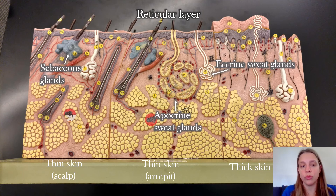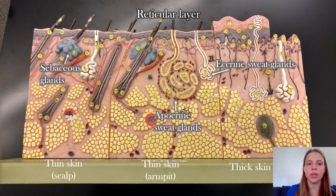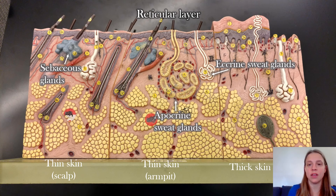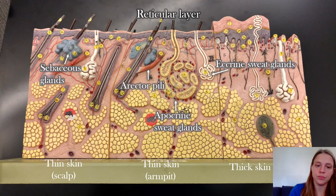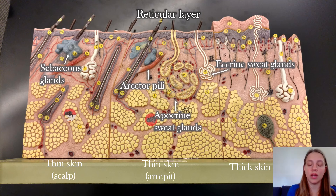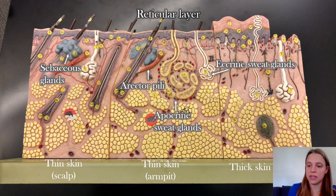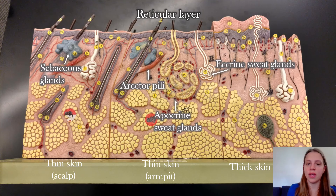There are also sebaceous glands, which are often associated with hair follicles. They produce an oil that lubricates and protects the hair follicle as well as the skin. Associated with the hair follicles are the erector pili, which are little muscles. They tighten the skin and raise the hair, giving you goosebumps, and that tightening contraction also milks the sebaceous gland, pushing oil up towards the surface.